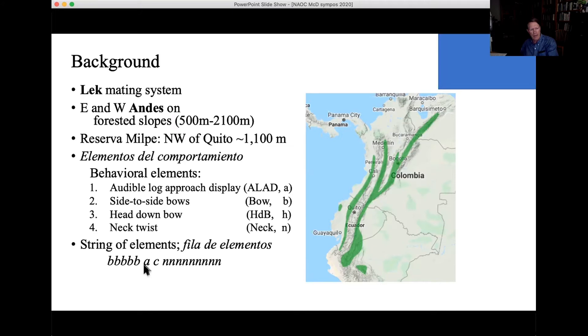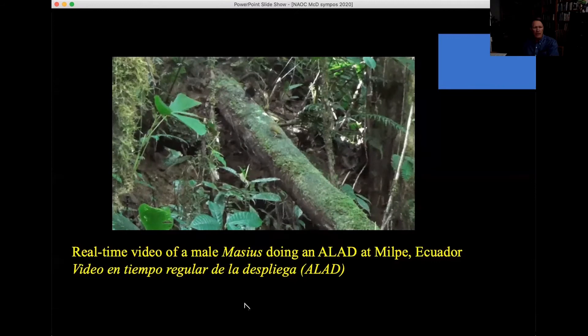And from the video, we can get this string of behavioral elements: B, B, B, bow, bow, bow, ALAD, copulation, neck, neck, neck, and so forth. So let's watch some video.